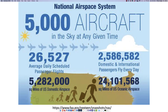Most Americans have flown at some point in their life, and at any point in time, there are 5,000 aircraft flying over the continental United States. On average, there are 26,527 scheduled passenger flights in the United States. Over 2.5 million passengers fly every day, both domestic and internationally, covering over 5.3 million square miles of U.S. domestic airspace and over 24.1 million square miles of U.S. oceanic airspace.